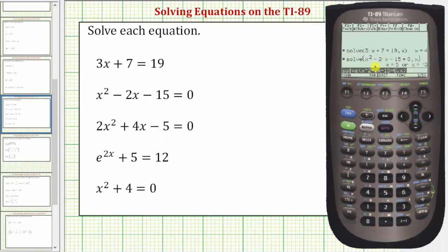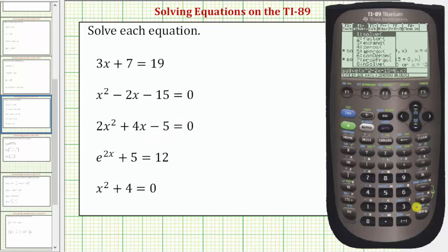Our next equation is another quadratic equation, but this one's not factorable. So enter F2, enter, 2x raised to the power of 2 plus 4x minus 5 equals 0, comma x, close parenthesis, enter.